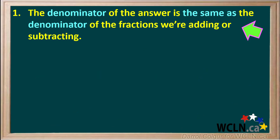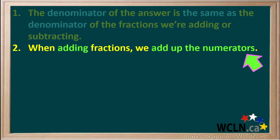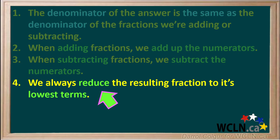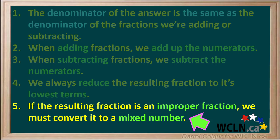To review: when adding or subtracting fractions with a common denominator, the denominator of the answer is the same as that of the fractions being added or subtracted. If we're adding fractions, we add up the numerators; if we're subtracting, we subtract the numerators. Don't forget — if the resulting fraction can be reduced, we must reduce it to its lowest terms. And finally, if the resulting fraction is an improper fraction, we must convert it to a mixed number.